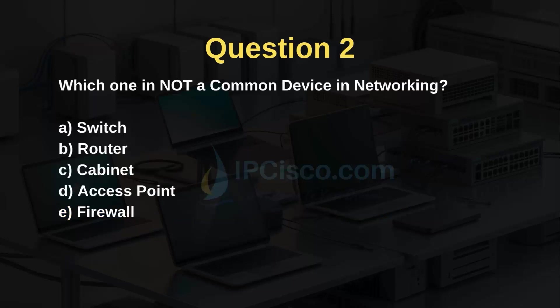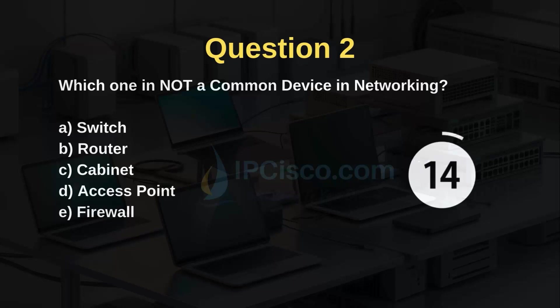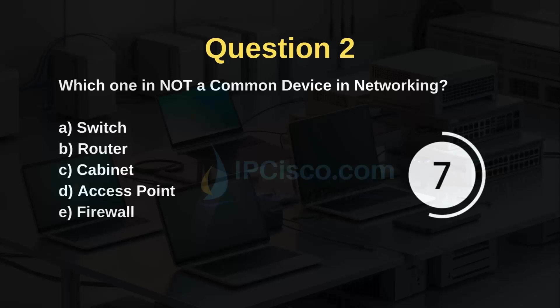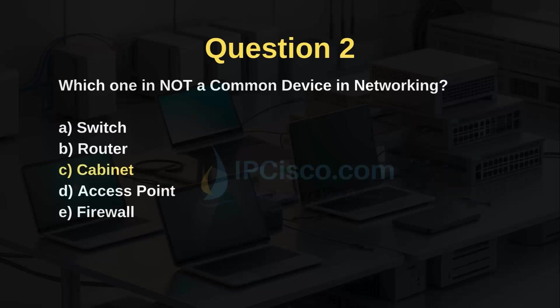Which one is not a common device in networking? Switch, router, cabinet, access point, or firewall? The answer is C — cabinet. A cabinet is equipment, but not a network device.